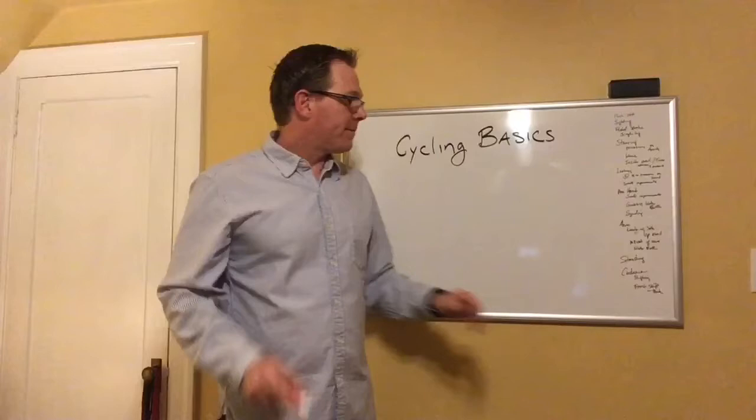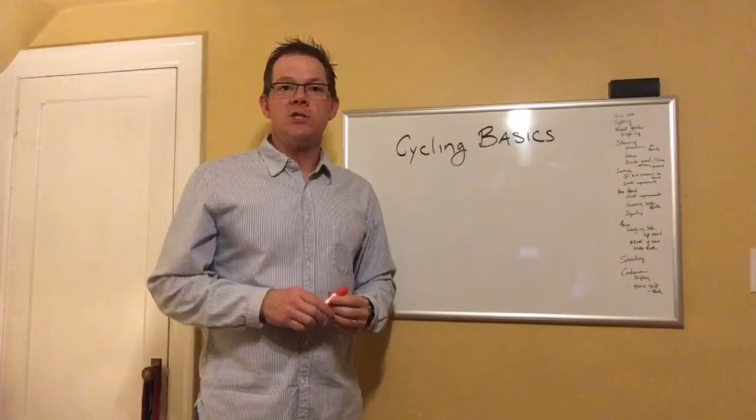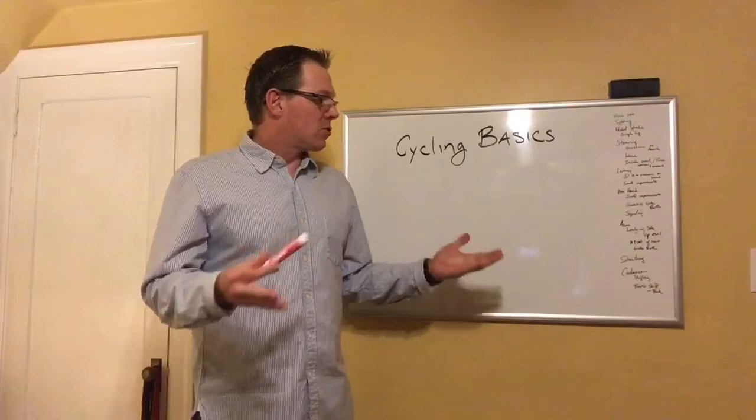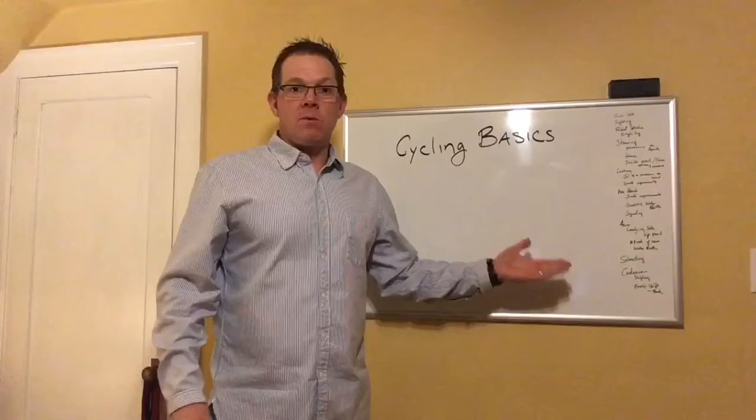Cadence. Sometimes people will start off at a really low cadence. Generally it's considered at 90 revolutions per minute, 90 RPMs is sort of ideal. Some people bike at a lower cadence, but if you're biking at 70, then we really want to get that up to 75, 80, 85.